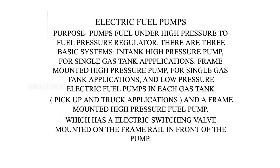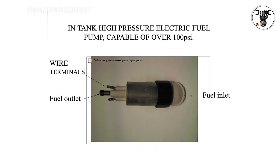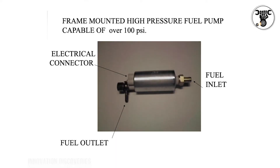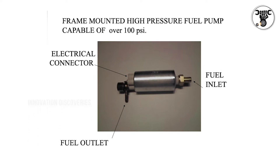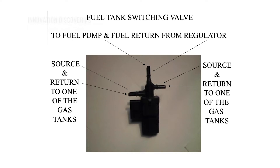The in-tank high pressure electric fuel pump is capable of over 100 pounds per square inch. It has wire terminals, a fuel inlet, and a fuel outlet. The frame-mounted high pressure fuel pump, also capable of over 100 PSI, has an electrical connector, fuel inlet, and fuel outlet. The fuel tank switching valve directs fuel to the pump and handles fuel return from the regulator to one of the gas tanks.